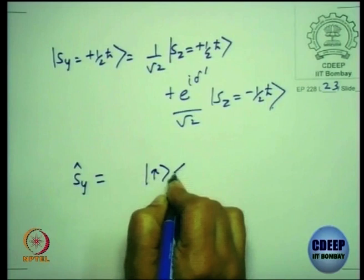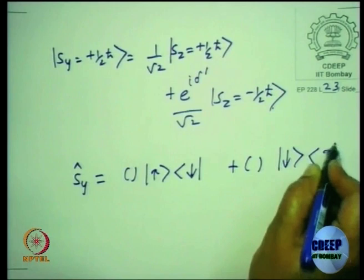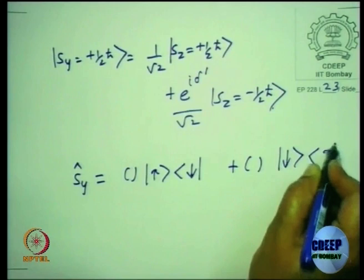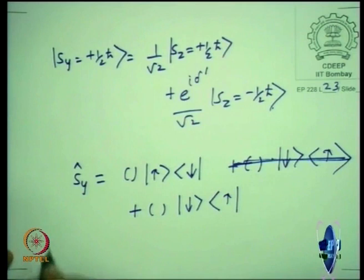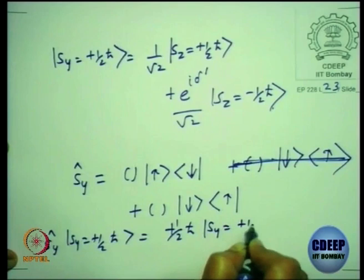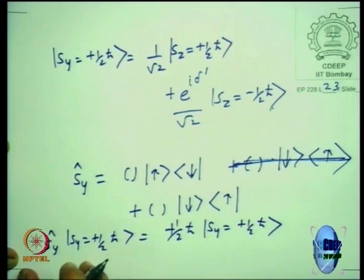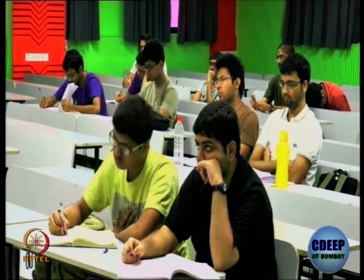Again, the Sy operator will be written in terms of outer products |up><up|, |up><down|, |down><up|, |down><down| with some coefficients. Fix those coefficients by the same arguments: if I apply the Sy operator to the |Sy = +ℏ/2> eigenstate, it has to return +ℏ/2 times that state. Rewrite it and find the matrix elements in the basis states of Sz. You will find a matrix for Sy, very similar to what you did for Sx, but only delta is replaced by delta prime.